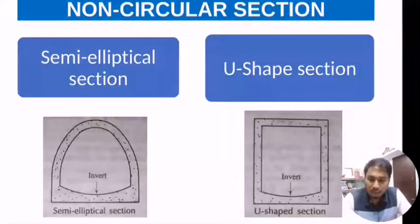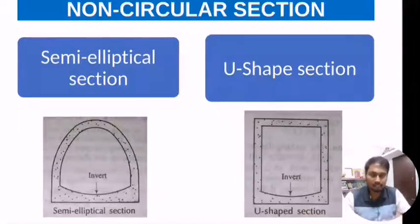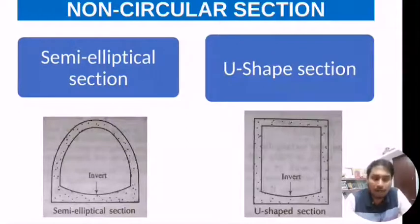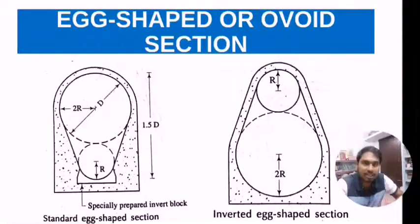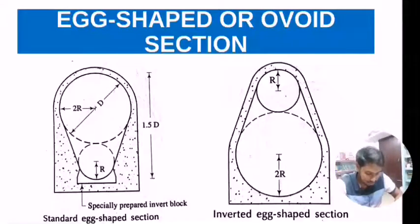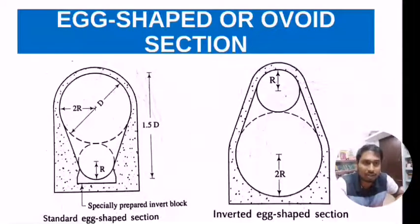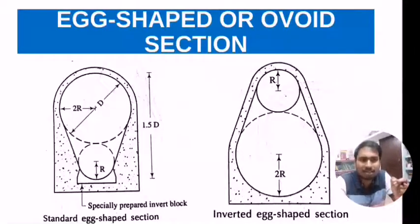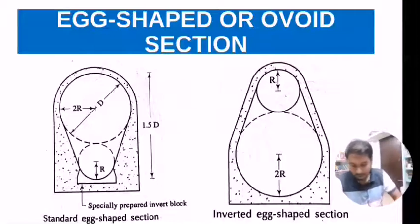The U-shape section is generally adopted for open sewer sections and is easy to construct in open cut. This U-shape section is suitable for carrying combined flow, and during low flow it gives a higher velocity compared to the circular section. Although construction is a little difficult, its advantages are considerably higher.